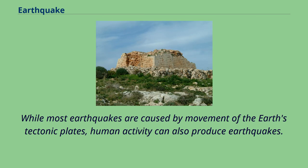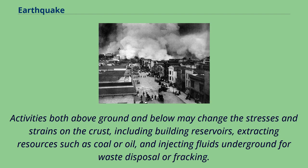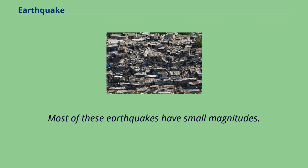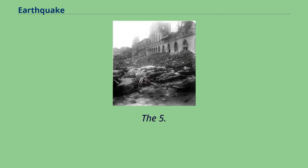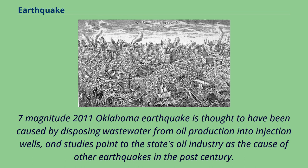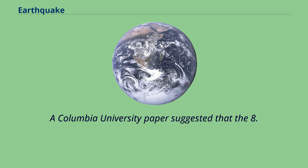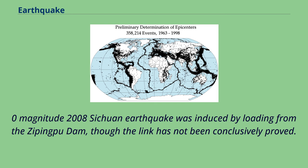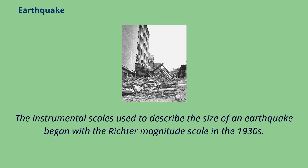While most earthquakes are caused by movement of the Earth's tectonic plates, human activity can also produce earthquakes. Activities both above ground and below may change the stresses and strains on the crust, including building reservoirs, extracting resources such as coal or oil, and injecting fluids underground for waste disposal or fracking. Most of these earthquakes have small magnitudes. The 5.7 magnitude 2011 Oklahoma earthquake is thought to have been caused by disposing wastewater from oil production into injection wells. A Columbia University paper suggested that the 8.0 magnitude 2008 Sichuan earthquake was induced by loading from the Zipingpu Dam, though the link has not been conclusively proved.